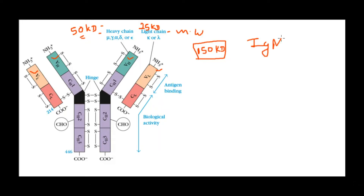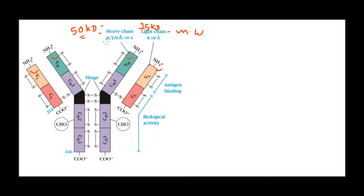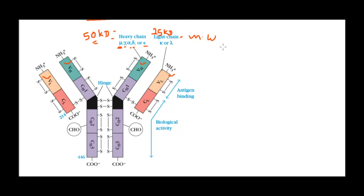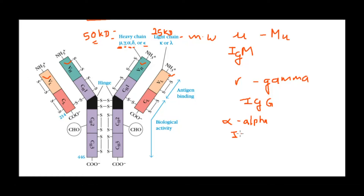Note that IgM or IgA will have a molecular weight greater than 150 kilodaltons because IgM is a pentamer and IgA is a dimer. Now, the heavy chain can be either mu, gamma, alpha, delta, or epsilon. Based on which heavy chain is present, the type of antibody is determined: mu → IgM, gamma → IgG, alpha → IgA, delta → IgD, and epsilon → IgE.